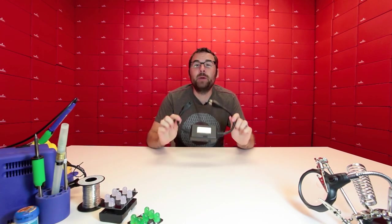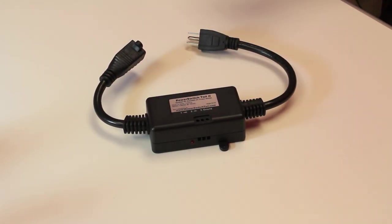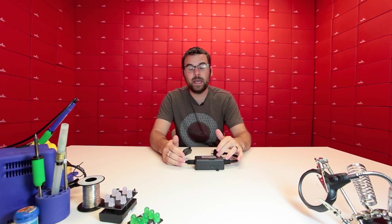Here we've got a product that might look a little bit familiar to you. This is a new version of an old product that we used to carry. This is the PowerSwitch Tail 2. This is the new version and the primary difference is it's a little bit beefier and this can handle a full 15 amps worth of current.